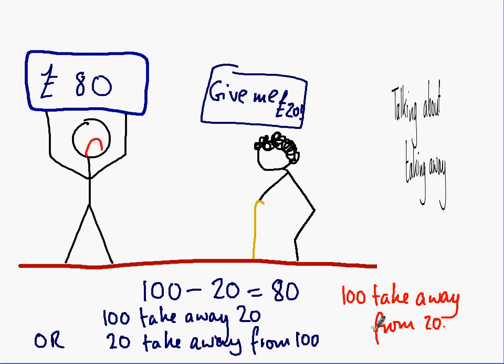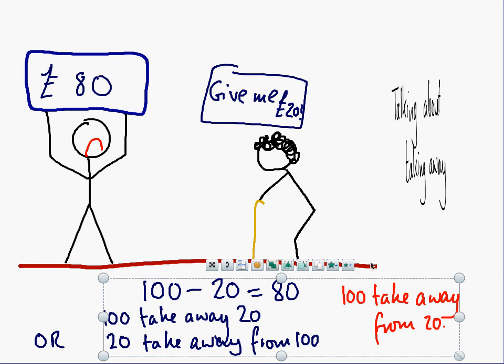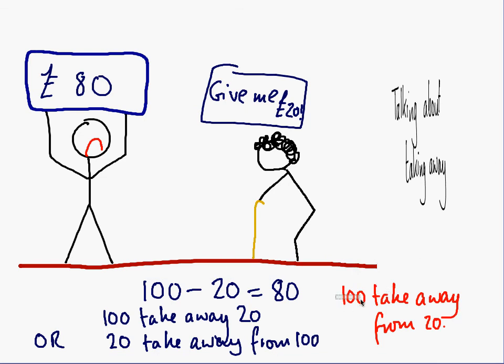If they're going to say take away from, then we need to change the numbers round. We need to swap the 100 in this example with the 20. So, that 100 should go over here. And that 20 needs to go over here. It's 20 take away from 100. And now, that you can say for this problem.